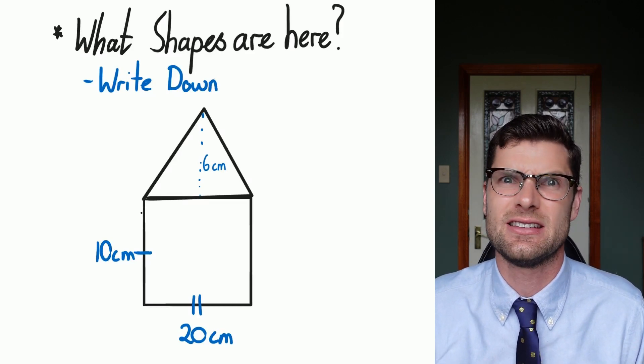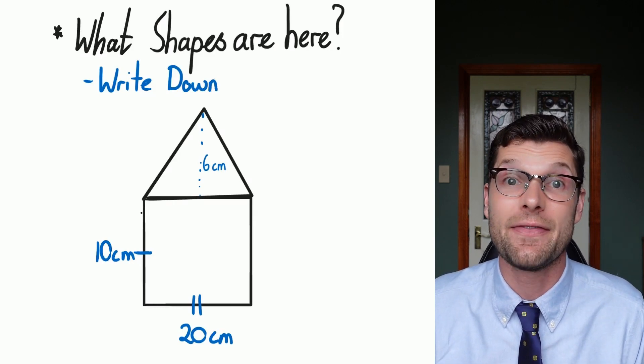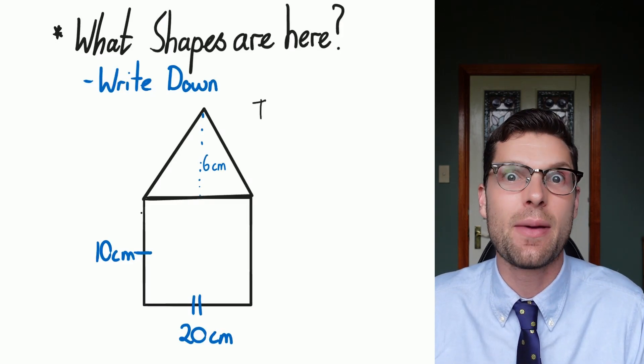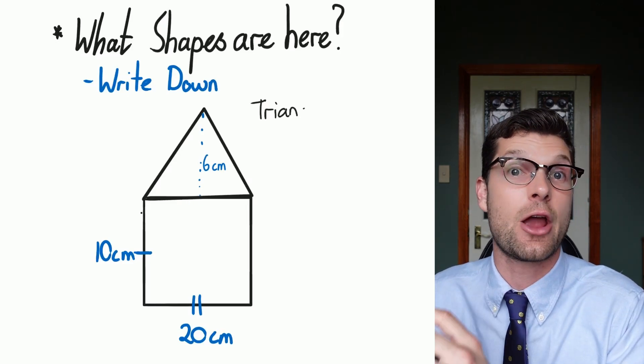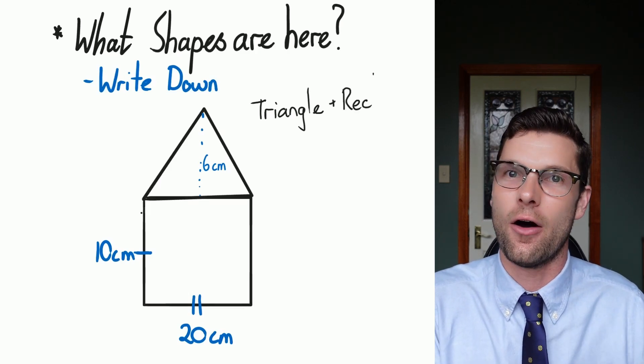So for this one here it's pretty simple. There's a triangle on top of a rectangle. If I write that down I'm going to be more than halfway to getting this right. And if I think about what's happening I've got to find the area of the rectangle and plus the area of the triangle.